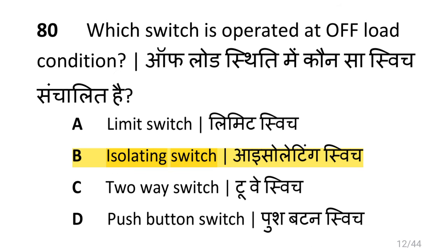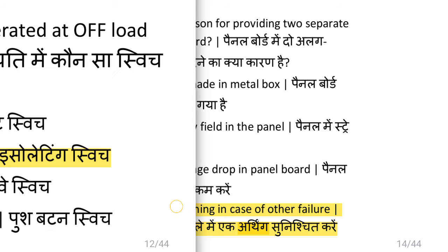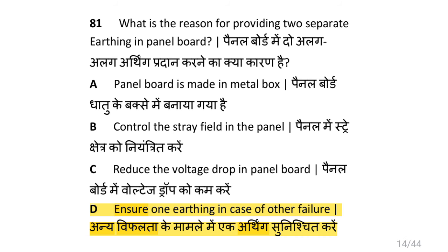Which switch is operated at offload condition? i.e. isolating switch. What is the reason for providing two separate earthings in a panel board? i.e. to ensure one earthing in case of other failure.